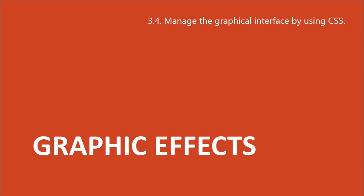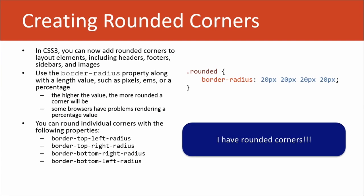Let's talk about how to implement these graphic effects. You can create rounded corners with just one property, and also modify and round individual corners. You use the border-radius property along with a length value such as pixels, ems, or a percentage. The higher the pixel value, the more rounded the corners will appear. Some browsers have problems rendering a percentage value, so it's better to stick with pixels and ems.